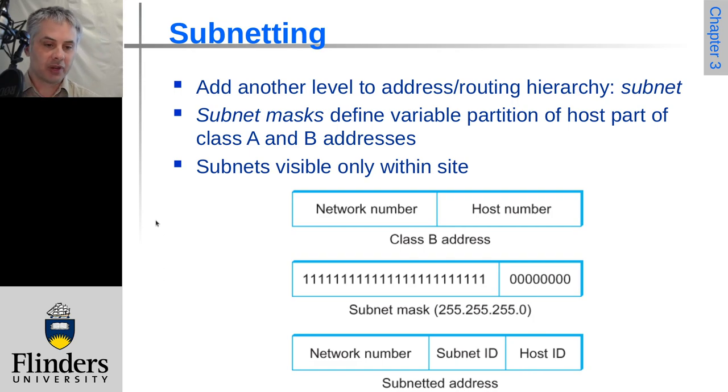Now the subnet masks to the global internet don't actually mean anything. So they're really an administrative convenience to be able to divide up a large network internally within an organization. And as we say, typically class A and B networks, this will happen with because they're so large.